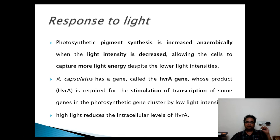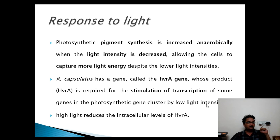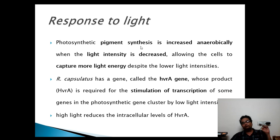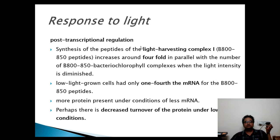In the case of R. capsulatus, a gene has been identified — the HVRA gene — which codes for HVRA protein. This protein is required for stimulation of transcription when light intensities are low. When light intensities are high, the level of HVRA is reduced and there is reduced synthesis of photosynthetic pigment, because less light harvesting pigment is needed to trap the available light for photosynthesis.